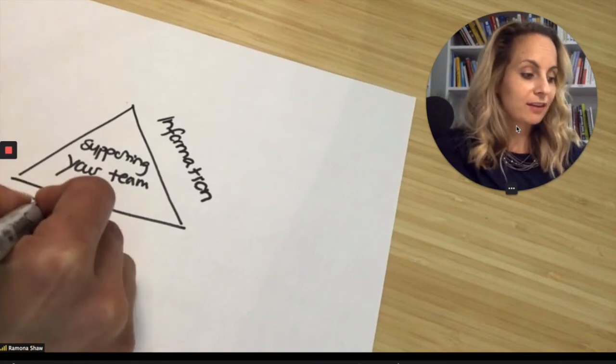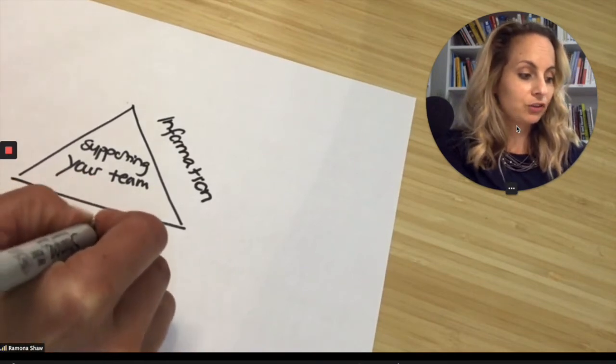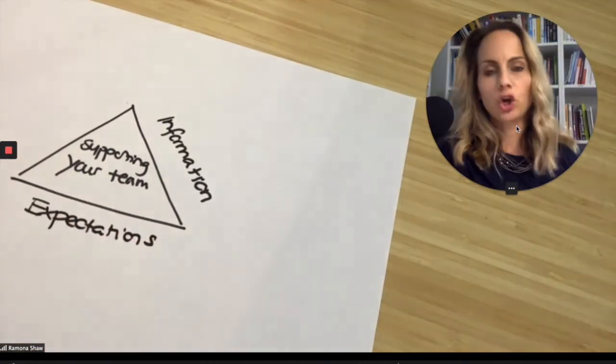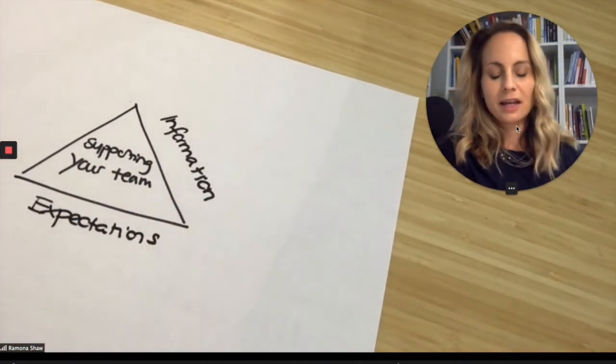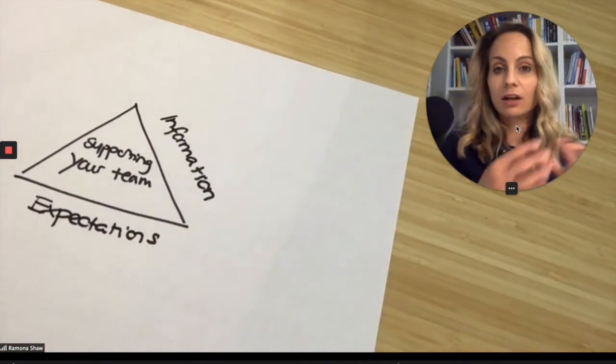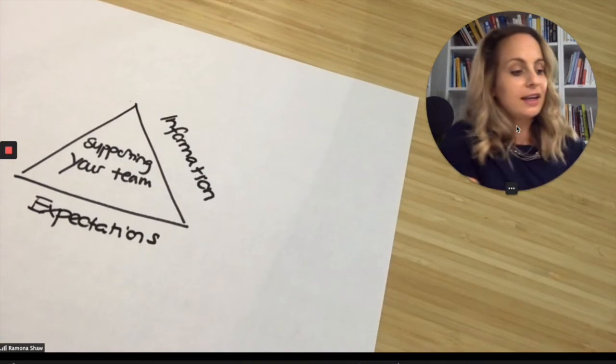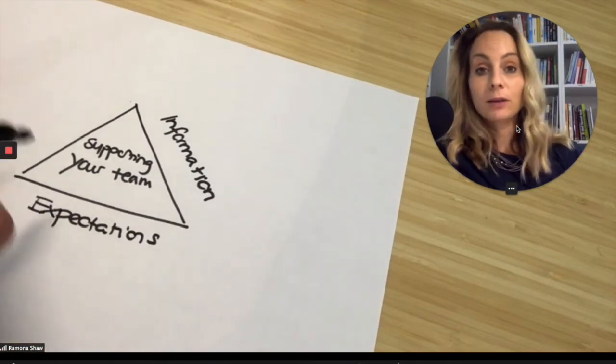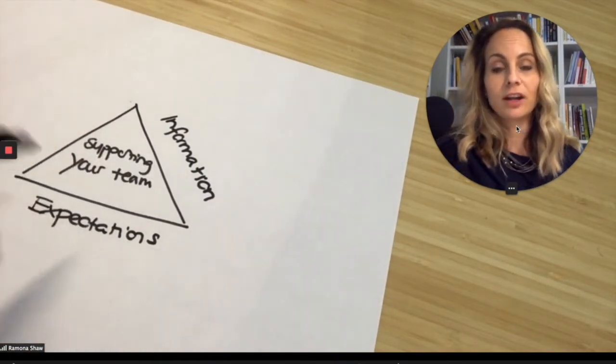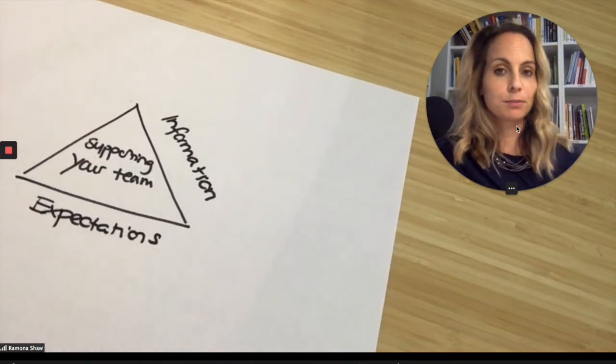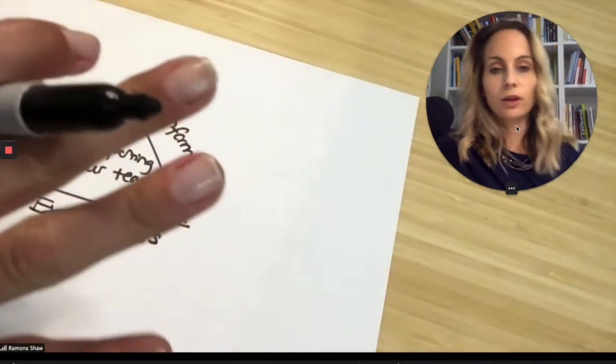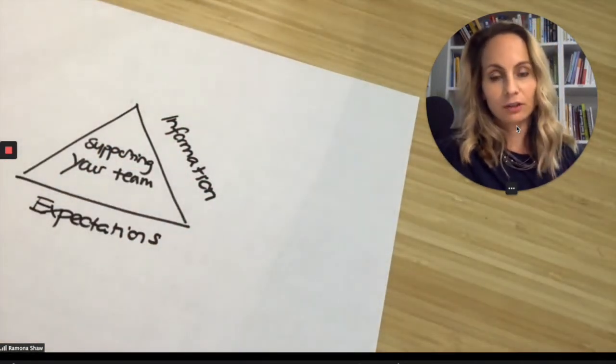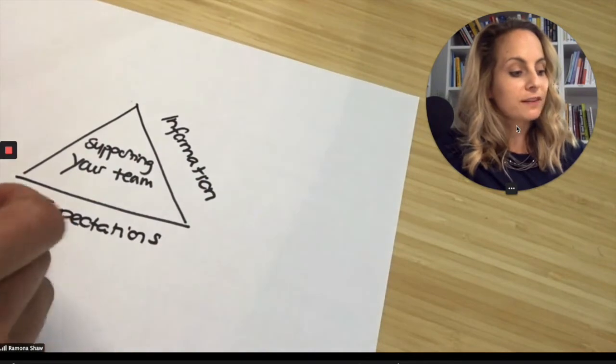The second one is expectations. Any expectations, agreements, goals, checking in on feedback, all that has to do with expectations. There's a lot that goes into this. And if you want to know more about all this, then check out the training that I'm linking to this post for a full outline of what each of these three components entails. But this is expectations.